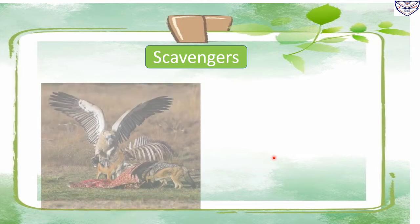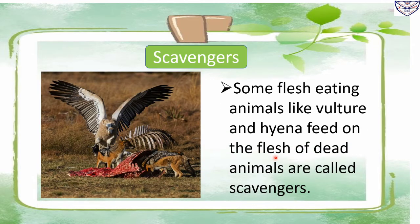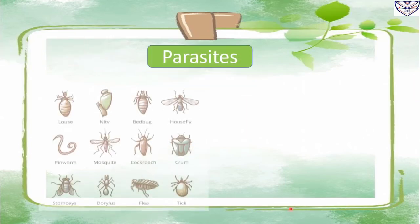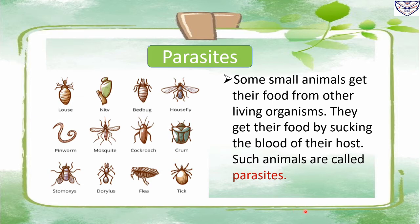Scavengers: some flesh-eating animals like vulture and hyena feed on the flesh of dead animals — these are called scavengers. Parasites: some small animals get their food from other living organisms by sucking the blood of their host. Such animals are called parasites. They may live on or inside the body of their host. For example, fleas and lice live on the body, while tapeworm, roundworm, and hookworm live inside the body.